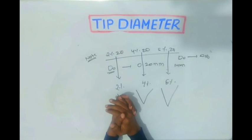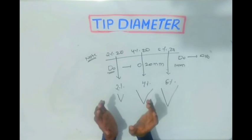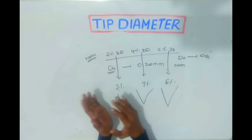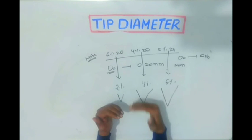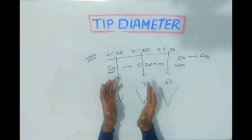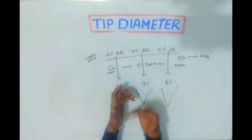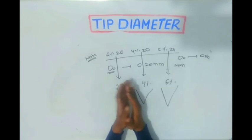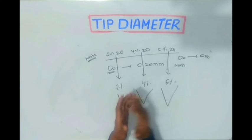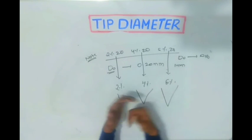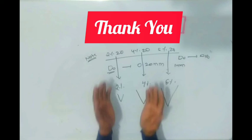Hope you understand. I will give a detailed explanation on the tapers of the instruments — the different tapers 2%, 4%, 6% — and a comparative note on how the diameter increases in a 2%, 4%, and 6% file, so you will have a better idea. Please keep subscribing to the channel to get notifications. In tomorrow's session I will give a complete comparison of 2%, 4%, and 6% files. Hope you enjoyed the session. Thank you.